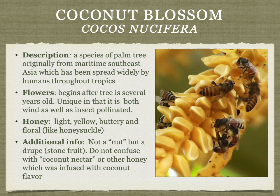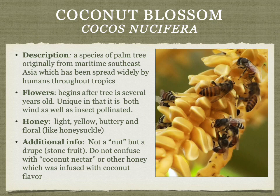Coconut blossom honey should not be confused with coconut nectar. Initially skeptical because coconut trees seem wind-pollinated — and wind-pollinated plants have no reason to produce nectar — it turns out coconuts are both wind and insect-pollinated. This makes sense: a coconut tree on a Pacific island may rely on wind, while on the mainland insects are plentiful. The honey is light yellow, buttery, floral, somewhat like honeysuckle. True coconut blossom honey is relatively hard to find and should not be confused with coconut-flavored honey.